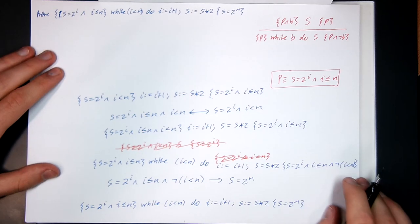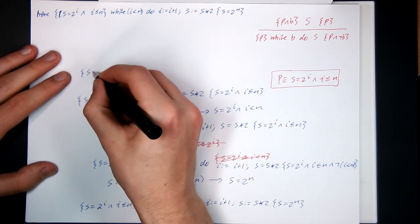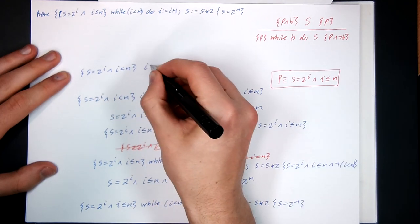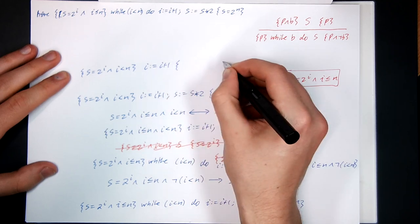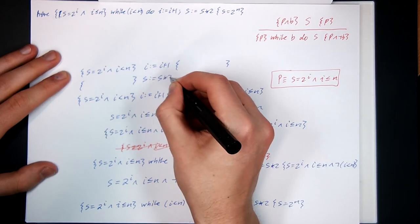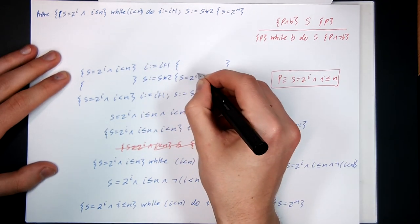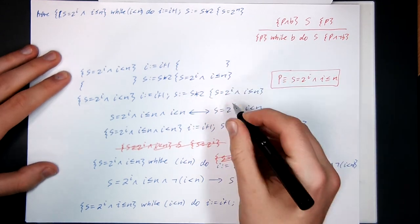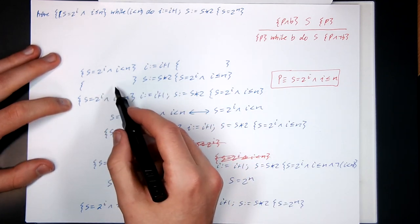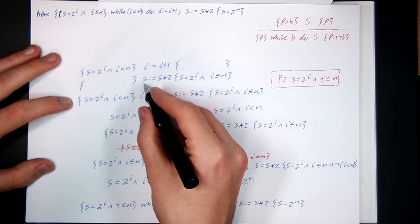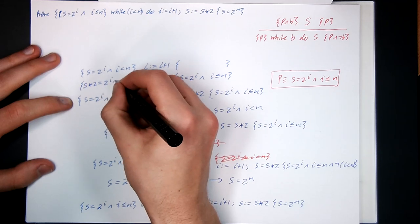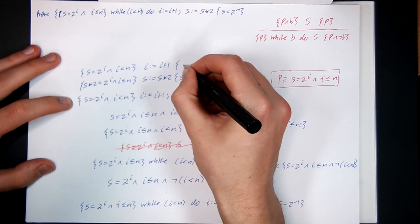So now we want to do sequencing backwards for some mysterious Q that we're yet to find out. And we'll work out what Q is in a moment. And then the same post condition. So now I'm going to fill the gap and then I can go sequencing forward. So how do I get it? What term is going to live over here? Well, I can just do assignment backwards. So replace the S's with S times 2's. So S times 2 is equal to 2 to the I and I is less than or equal to N. Copy that over here.